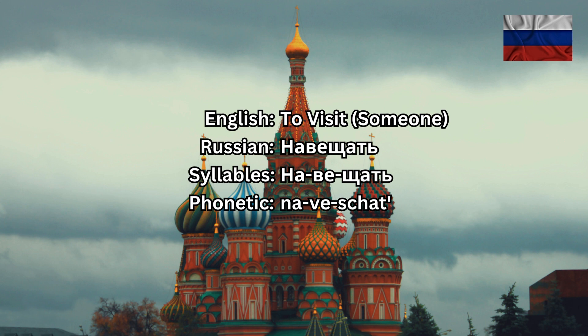We use the verb naveshchat' only when we talk about people in Russian. Naveshchat' has three syllables: na-vi-shchat', and the stress falls on the last syllable, 'shchat''. Listen and repeat: naveshchat', naveshchat', naveshchat'.